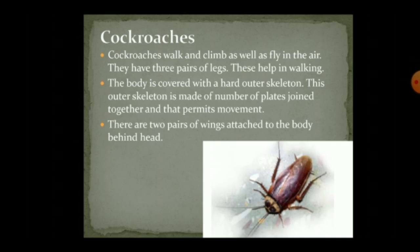Then come the cockroaches. Cockroaches walk, climb, and also fly, and they have three pairs of legs — six legs in total — which help in walking. There are two pairs of wings attached behind their head. There is a hard outer skeleton made up of plates that help the cockroach to move.